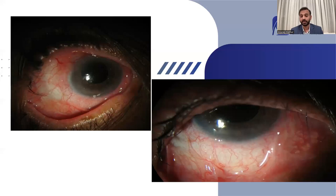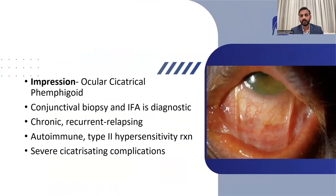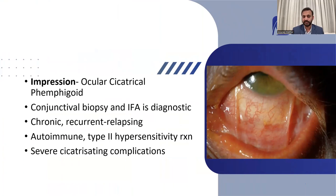Ocular cicatricial pemphigoid is a very important condition — it can be blinding in most cases. How do you diagnose it? Whenever you see this kind of inflammation with vertical folds rising from the lower fornix going all the way up to the upper fornix, you need to take a biopsy from these areas and do immunofluorescent assays. Antibodies are seen against the basement membrane of conjunctival epithelium — and when you see them, this is a sure-shot diagnosis of OCP.